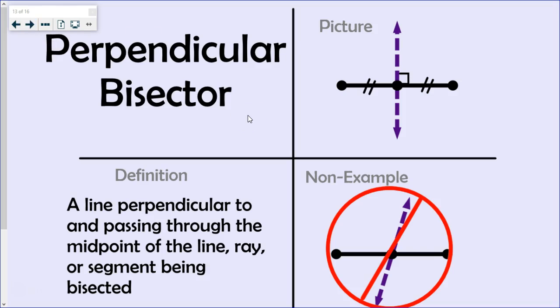Taking a look at a perpendicular bisector, it's a line perpendicular to and passing through the midpoint. That's the key information. A perpendicular bisector always passes through the midpoint. The midpoint is exactly in the middle. So, for example, here, this perpendicular bisector divides this segment into two equal length parts. For example, if this side of the segment measures five inches, then the other side must also equal five inches in length.